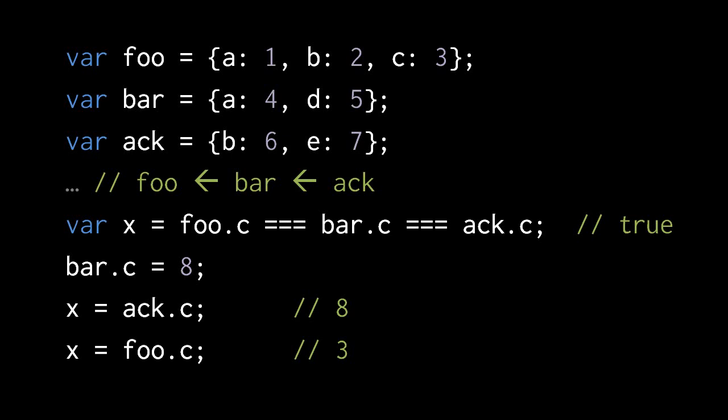When we assign a value to bar.c, we are actually creating a property C in that object. The key idea is that when we're assigning to a property, we're always assigning to that object — we're never looking up the chain. It always affects that object itself. So now that the object in bar has its own property C, if we access ac.c we're going to get the property C of the object in bar, not foo, because JavaScript looks in bar before it looks in foo. When we access foo.c, however, we still get back the value 3, because foo still has its own property C, which has remained untouched.